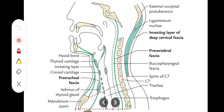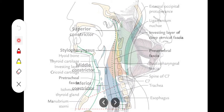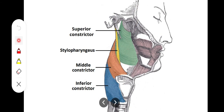The remaining layers are the buccopharyngeal fascia and the pharyngobasilar fascia. The buccopharyngeal fascia is located just in front of the prevertebral fascia. It extends from the base of the skull, and downward there is a space called the retropharyngeal space.